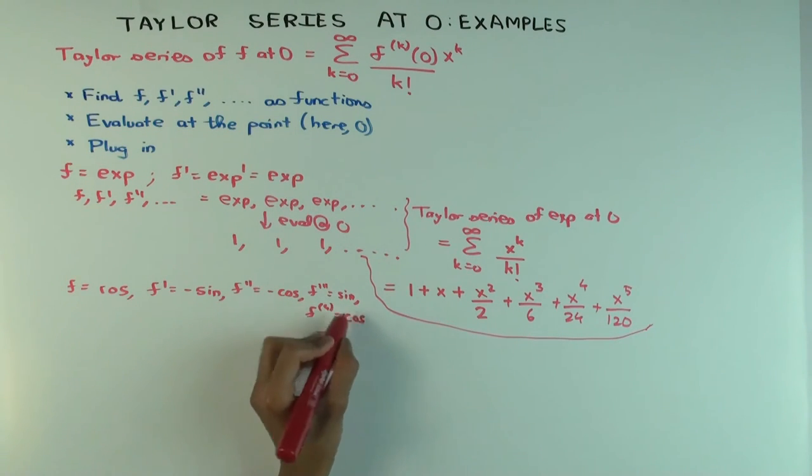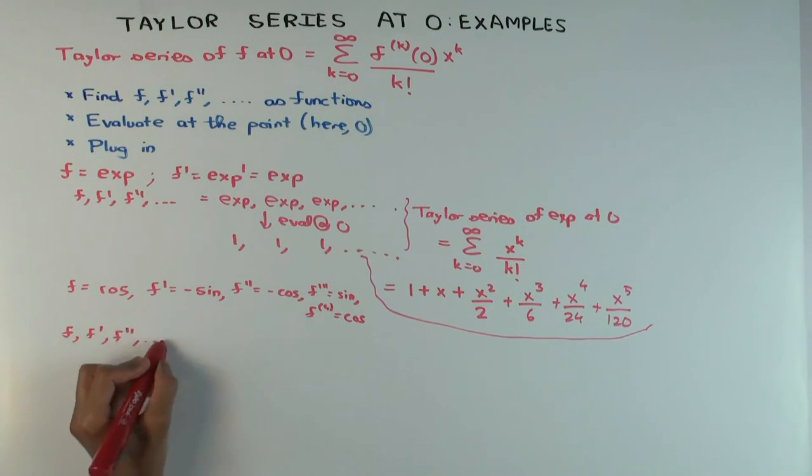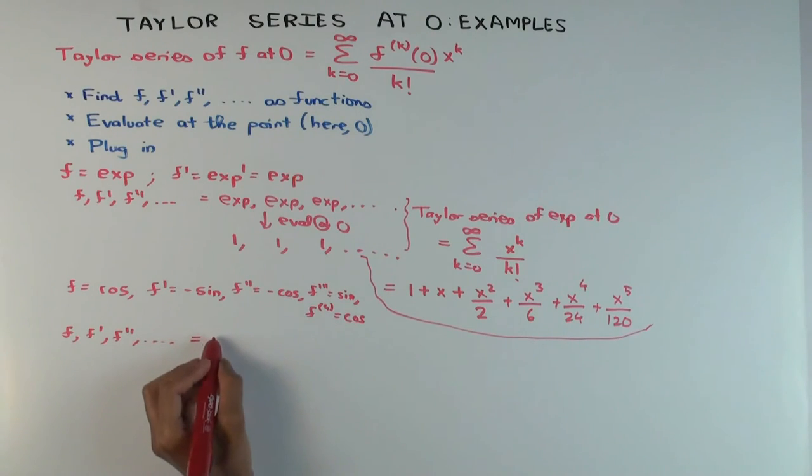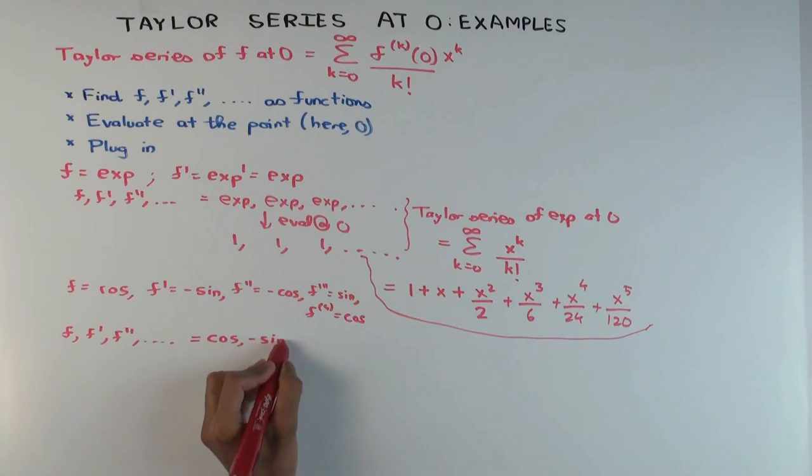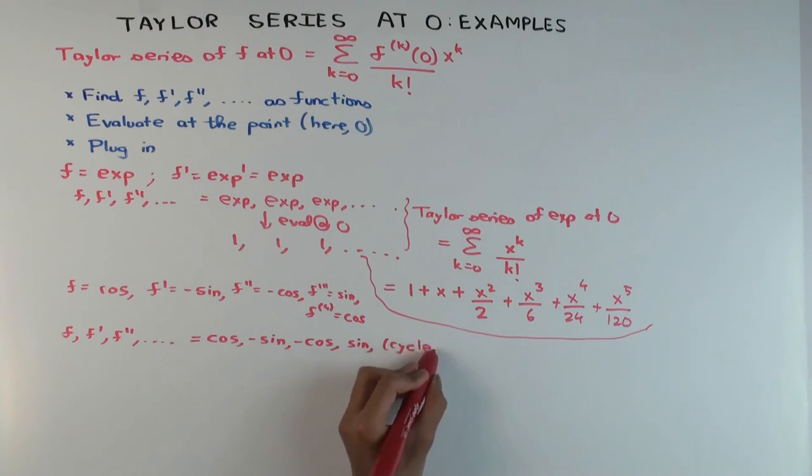So it repeats after four derivatives. The sequence of derivatives is a periodic sequence with period four. And it goes cosine - remember, you always start from the function itself - cosine, negative sine, negative cosine, sine, and then it cycles.